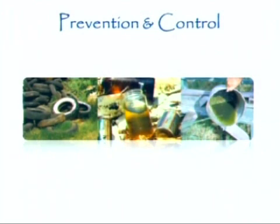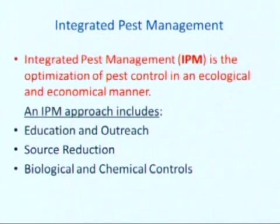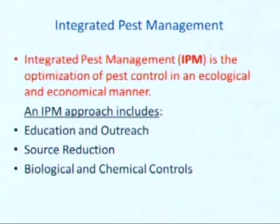The city uses a system called Integrated Pest Management, or IPM. This is the optimization of pest control in an ecological and economical manner. An IPM approach includes a variety of techniques including education and outreach, surveillance of mosquito populations, source reduction to reduce the opportunity for mosquito breeding, larviciding breeding sites to kill the pre-adult stages, and adulticiding to kill the remaining adults in order to further reduce the breeding populations.